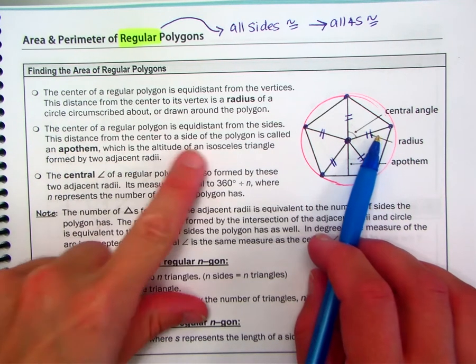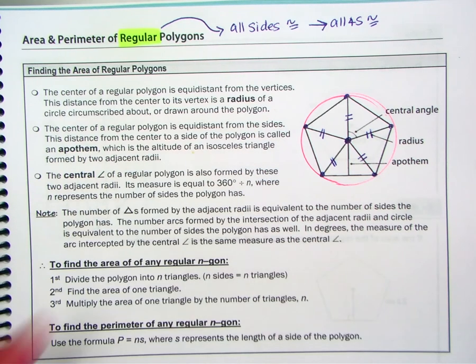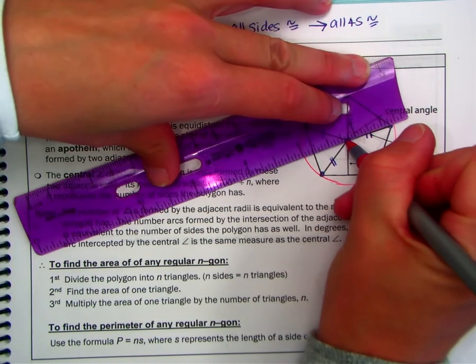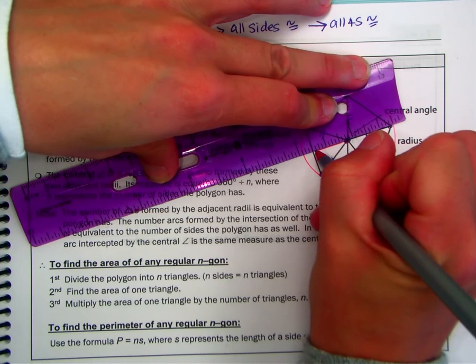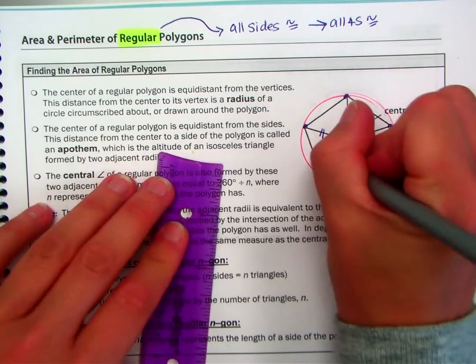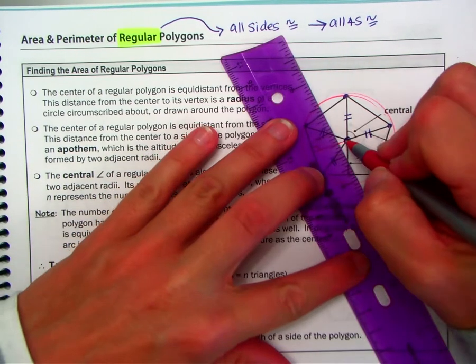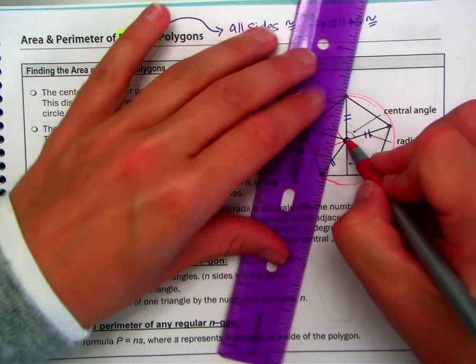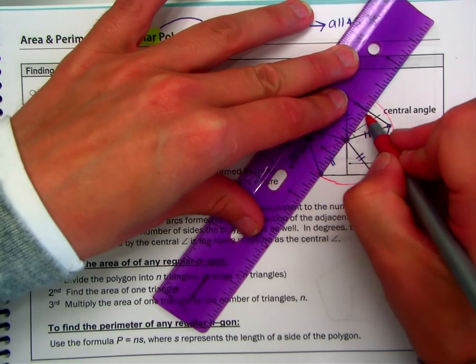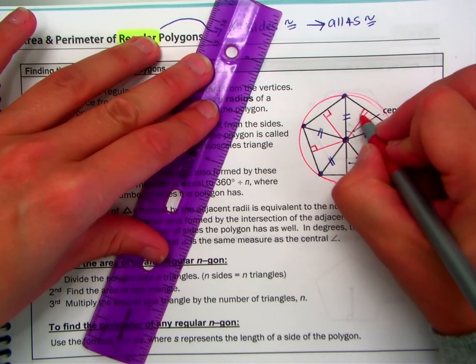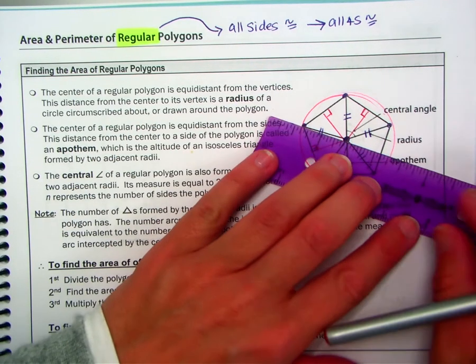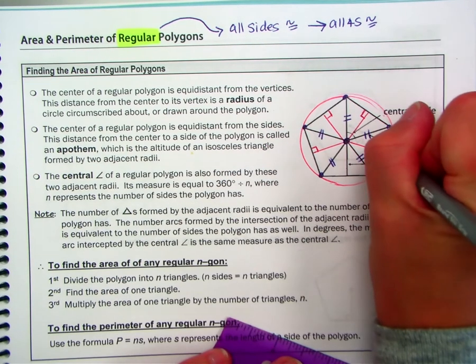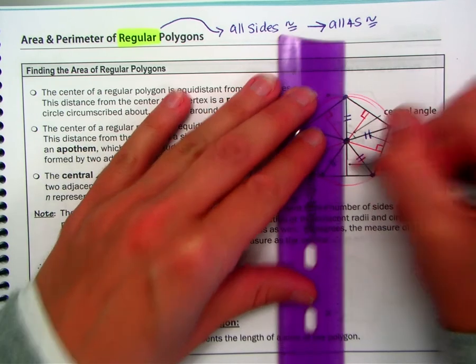The center of a regular polygon is equidistant from the sides. So remember, we measured distance from the center to a side by lining up our ruler and making sure that it's perpendicular. So this segment, I'm going to draw all five, is congruent to this segment, is congruent to this segment. Our distance, lining up the ruler here.